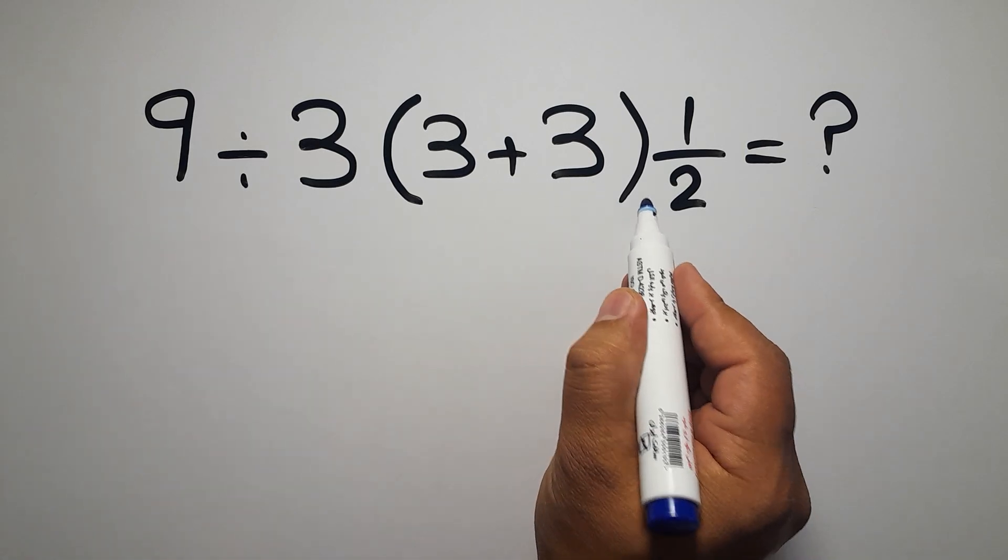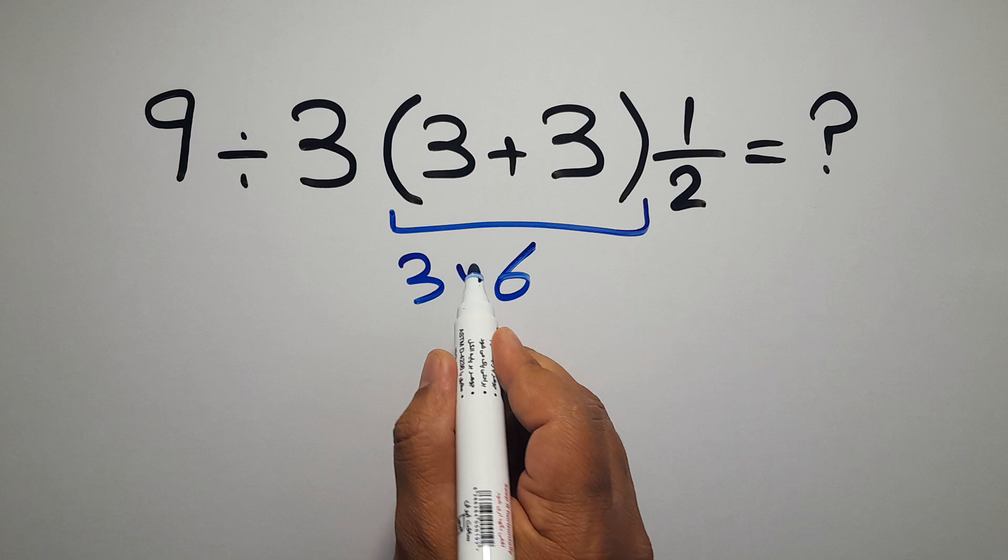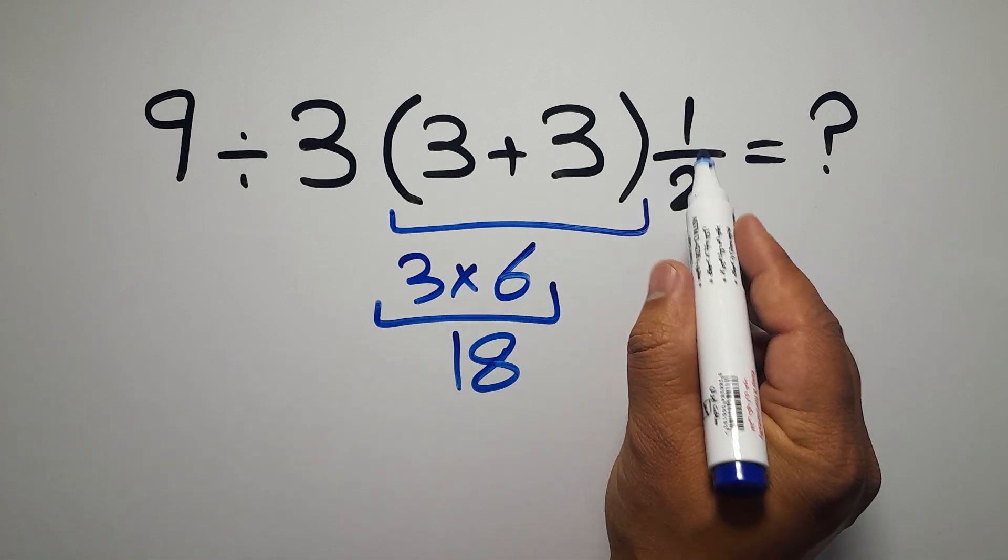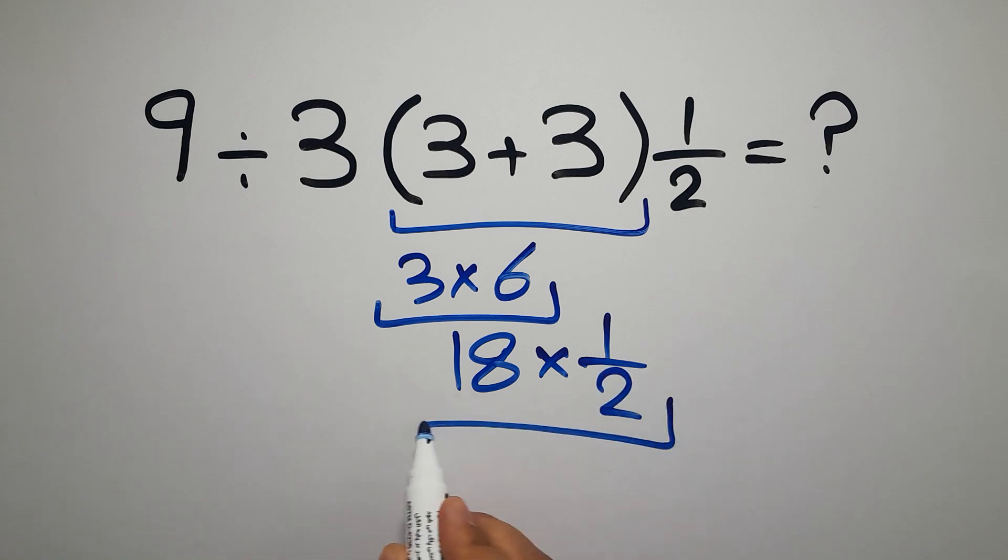3 plus 3 gives us 6, and 3 times 6 equals 18, so 18 times 1 over 2, which equals 18 divided by 2, and 18 divided by 2 is just 9.